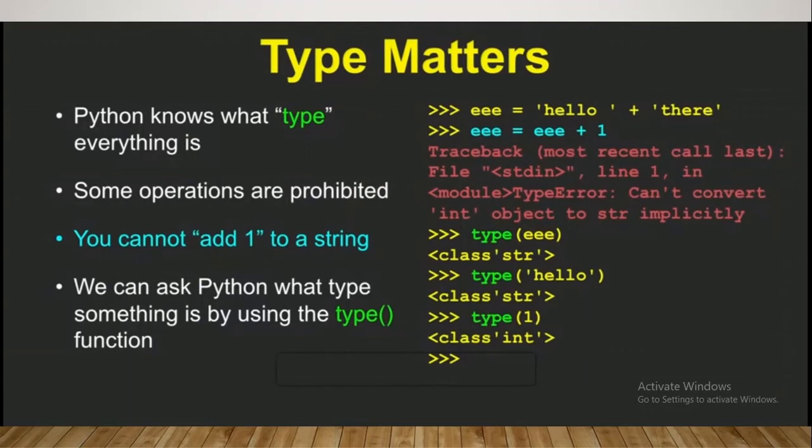Five plus hello doesn't mean anything, so Python doesn't know what's happening. It just gives you an error traceback: just go and look at the stuff you made. It tells you that you cannot add one to the string. You can ask Python what type something is by using the type function.